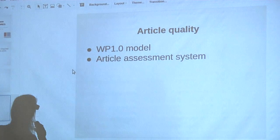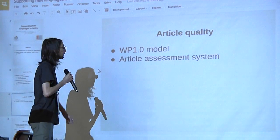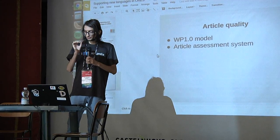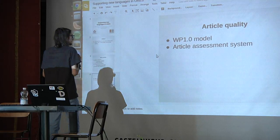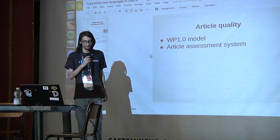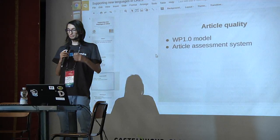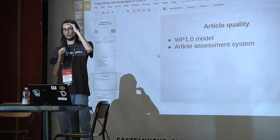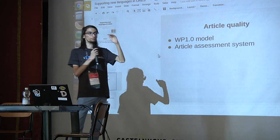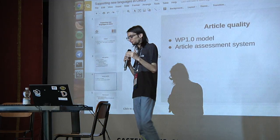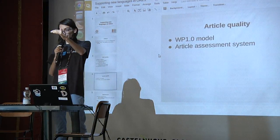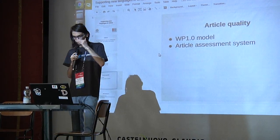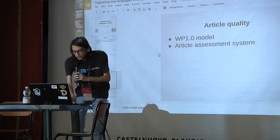For article quality models, there is a model for some languages including English Wikipedia. It works based on the article assessment system. You classify an article as featured or not featured — featured, good — and then there are A, B, C, start, and stub classes. These are the classifications the English Wikipedia model uses.